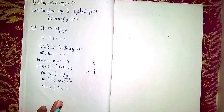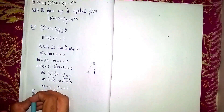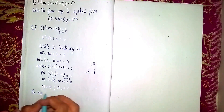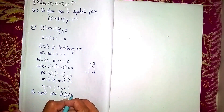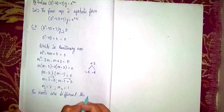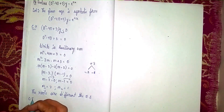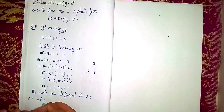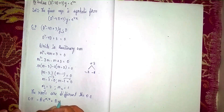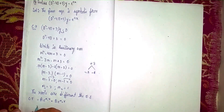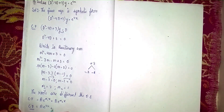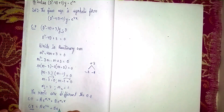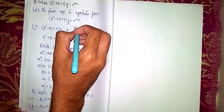We got two roots: m1 equals 3 and m2 equals 1. The roots are real and different. For this case, the complementary function is a·e^(m1·x) plus b·e^(m2·x). Substituting the values, the complementary function is a·e^(3x) plus b·e^x. This is our Step 1.